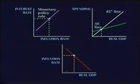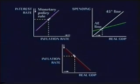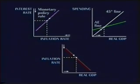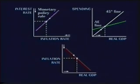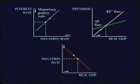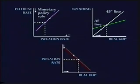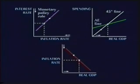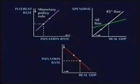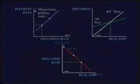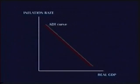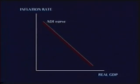Similarly, when the inflation rate falls, the eventual result is a rise in real GDP. Thus, the relationship between inflation rate and real GDP can be represented as a downward-sloping curve. This is called the ADI curve, or aggregate demand inflation curve.